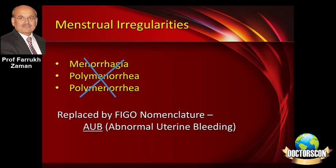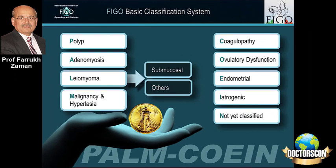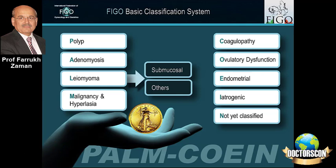We will have to qualify what abnormal uterine bleeding means. This is something designed for remembering the whole thing easily. You can see the diagram here showing a palm and a coin. It is for the acronym PALM. On this side of the reasons for abnormal bleeding, it can be Polyp, Adenomyosis, Leiomyoma — which is fibroids — and Malignancy and hyperplasia. That makes PALM.